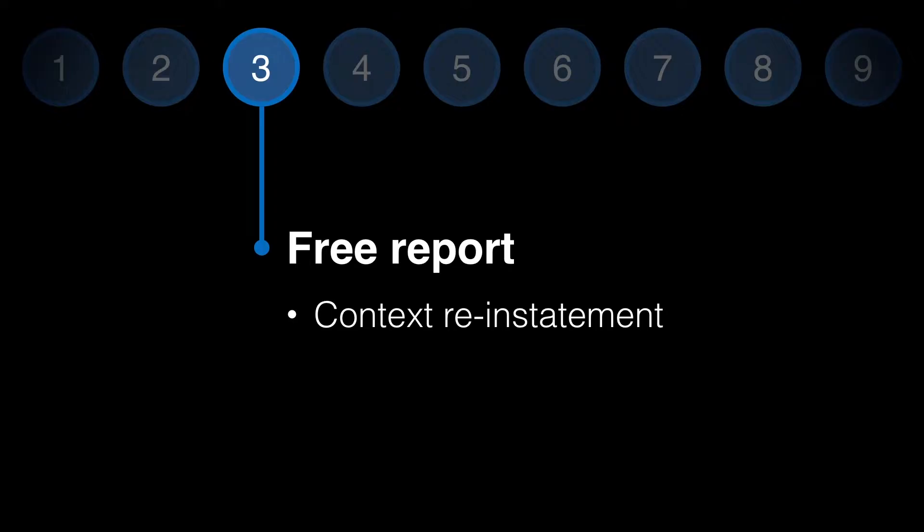Here the interviewer also needs to explicitly transfer control of the interview to the witness. Many witnesses will come into the interview and expect the interviewer to control it — this expectation has to be corrected. The interviewer needs to make clear that they are there only to facilitate recall; it is the witness's interview, not the interviewer's. At this point the interviewer should encourage the witness to report everything they've seen, and in phase three the interviewer initiates a free report using the context reinstatement instruction.